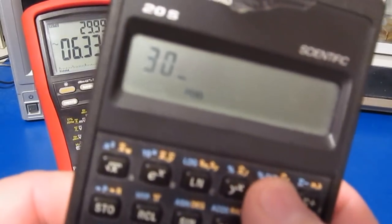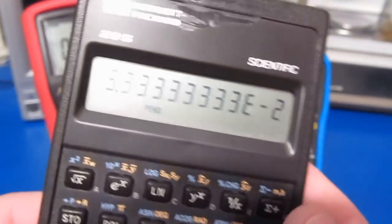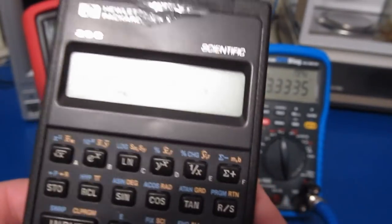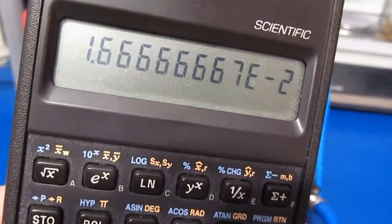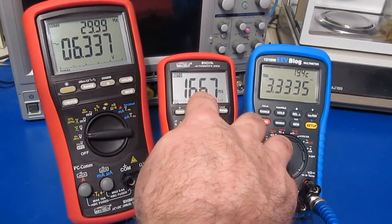So if we take the reciprocal of 30 Hertz, that's 33.33 milliseconds and then divide that by 2. That'll give us 16.666 milliseconds, which is what this meter is showing us.